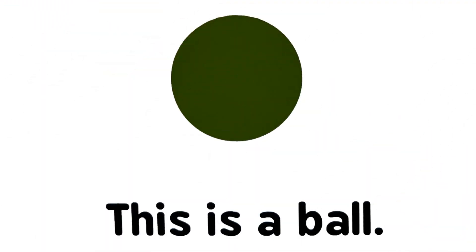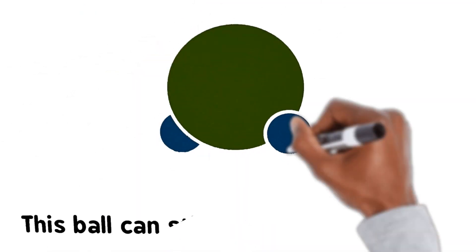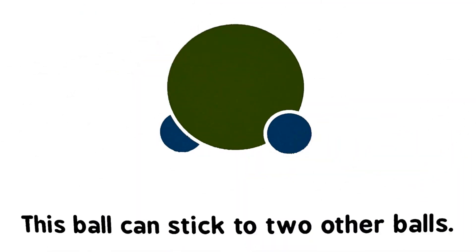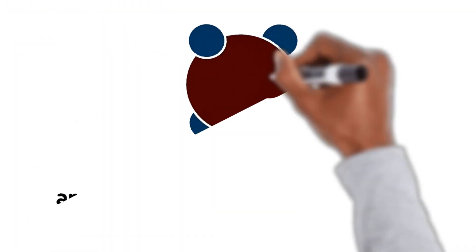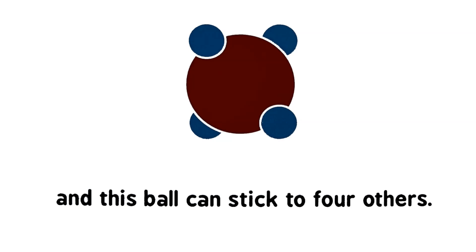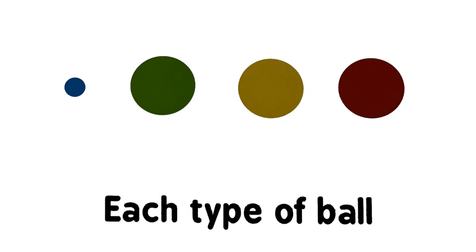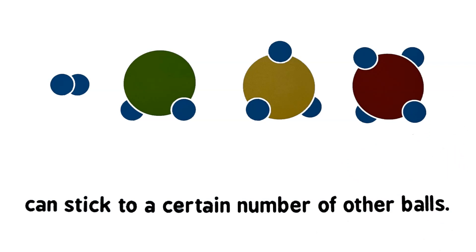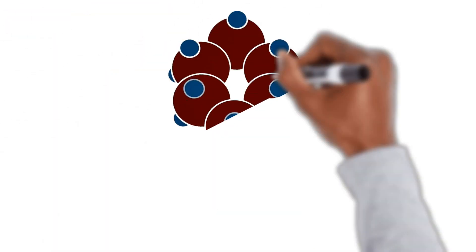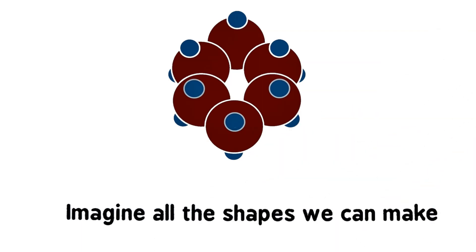This is a ball. This ball can stick to two other balls. This ball can stick to three others. And this ball can stick to four others. Each type of ball can stick to a certain number of other balls. Imagine all the shapes we can make just by combining these balls.